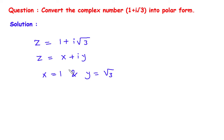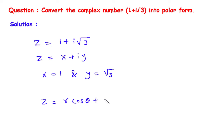Now we have to convert it into its equivalent polar form. The equivalent polar form will be z is equal to r cos theta plus i r sin theta. So we have to find the value of r and theta.